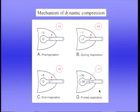Tissue resistance should also be mentioned. Like airway resistance, it is caused by the sliding of one tissue over another as lung volume changes. It is less than airway resistance, so we don't spend as much time on it, but it is a component of total pulmonary resistance.